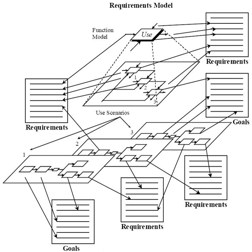According to Booch, algorithmic decomposition is a necessary part of object-oriented analysis and design, but object-oriented systems start with and emphasize decomposition into classes. More generally, functional decomposition in computer science is a technique for mastering the complexity of the function of a model. A functional model of a system is thereby replaced by a series of functional models of subsystems.